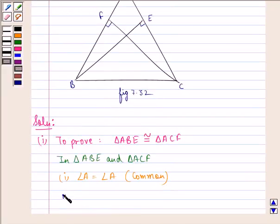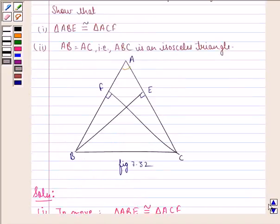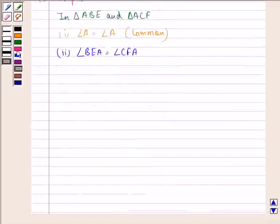Second thing we can say here is angle BEA is equal to angle CFA. That means this angle is equal to this angle because CF and BE are the perpendiculars. They are each 90 degrees.